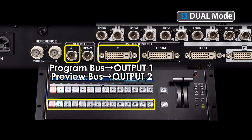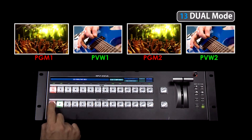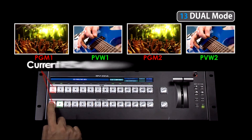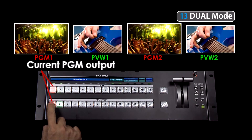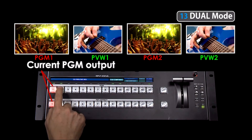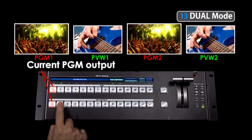The preview bus is output from the connector labeled number two on those same output connectors. The channels that are red are the current output, and the channels that are green are being previewed.